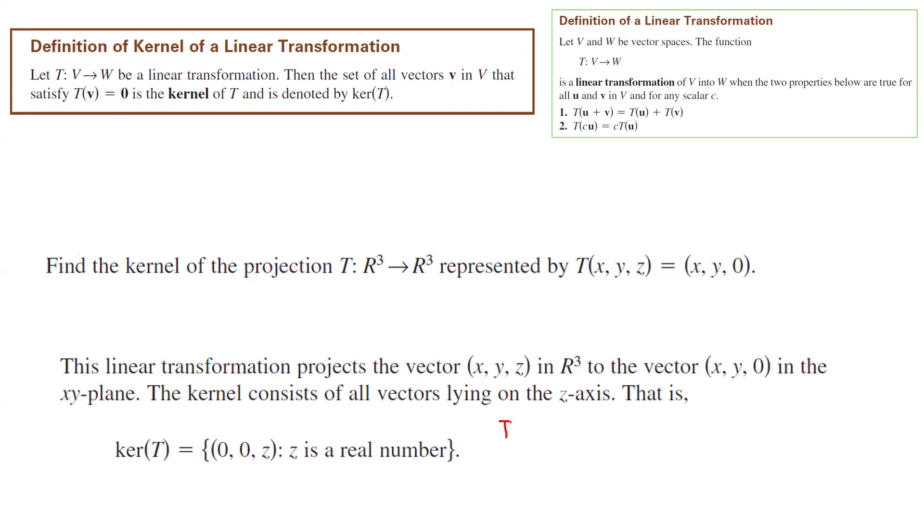Because if I just plug in (x, y, z) and I set it equal to (0, 0, 0), which is the zero vector in this space, by definition, T(x, y, z) is nothing but (x, y, 0).